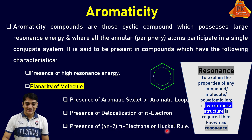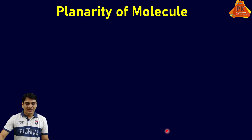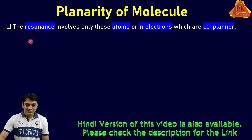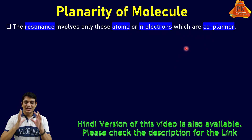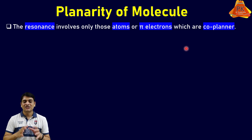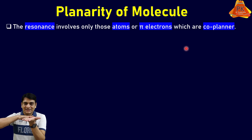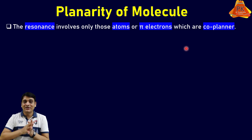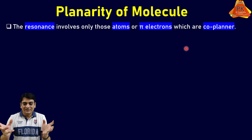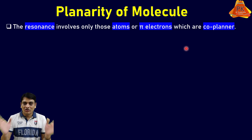Now let's discuss the planarity of the molecule. The resonance involves only those atoms or pi electrons which are co-planar. Resonance will take place in those molecules or compounds where pi electrons are present in a single plane. If pi electrons are present in different planes, then aromaticity will not be possible.